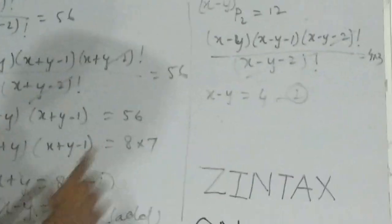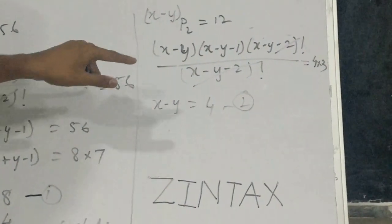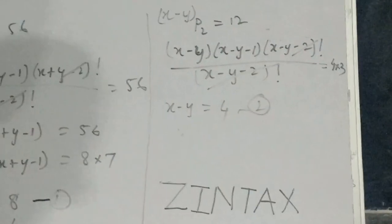And in the second equation there is x minus y into x minus y minus 1 factorial into x minus y minus 2 factorial. So these two parts will get cancelled.